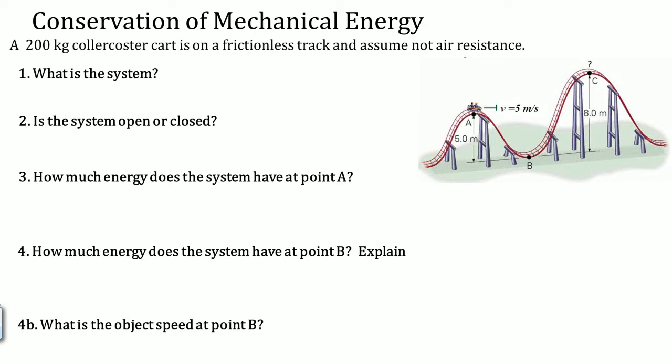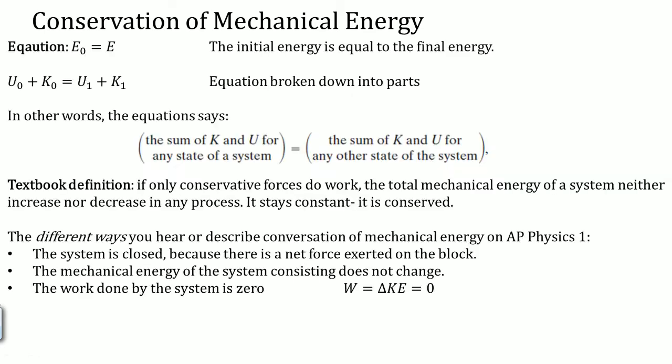Let's look at a traditional problem covering conservation of mechanical energy. A 200-kilogram roller coaster cart is on a frictionless track; assume no air resistance. First, what is the system? You have to say cart and Earth, because Earth gives you the potential energy of MGH. Second, is the system open or closed? The system is closed because it is on a frictionless track and there is no air resistance — the only forces are conservative.